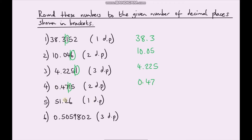One decimal place: this is our first decimal place, so we draw a line here. This digit is greater than 5 so this one bumps up by 1 — it's 51.3. And the last one, three decimal places: first, second, third — put our line here. This digit is greater than 5, so we bump this one up by 1 and it becomes 0.506.